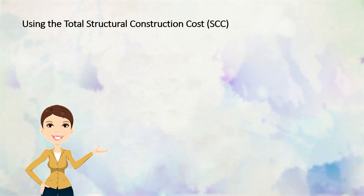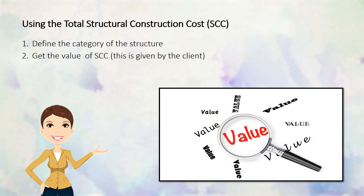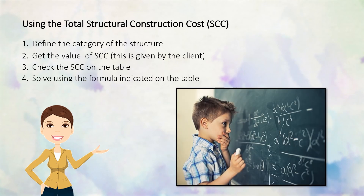There are two methods for solving structural fee. The first method is using the total structural construction cost. In solving using this method, first you have to define the category of the structure. Next, get the value of SCC which is given by the client. Thirdly, check the SCC on the table. And lastly, solve using the formula indicated on the table.